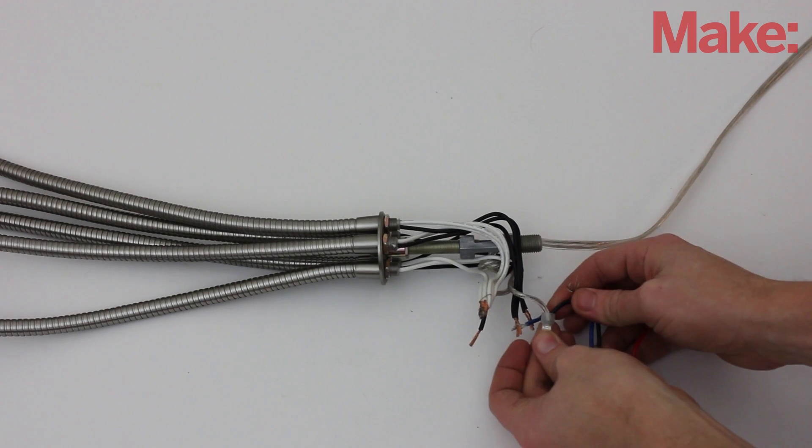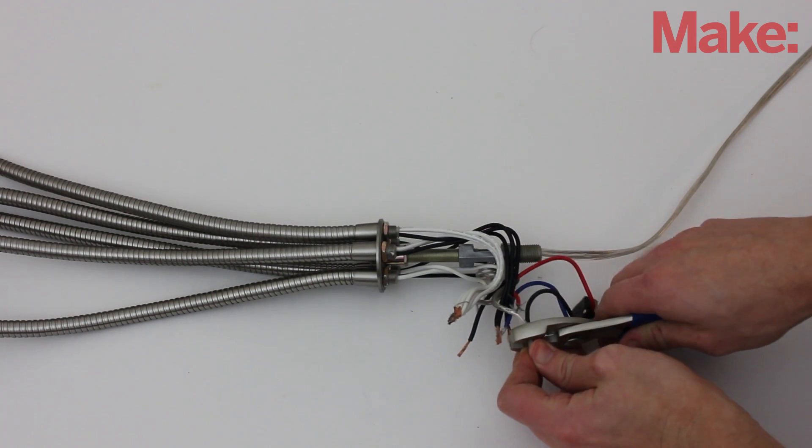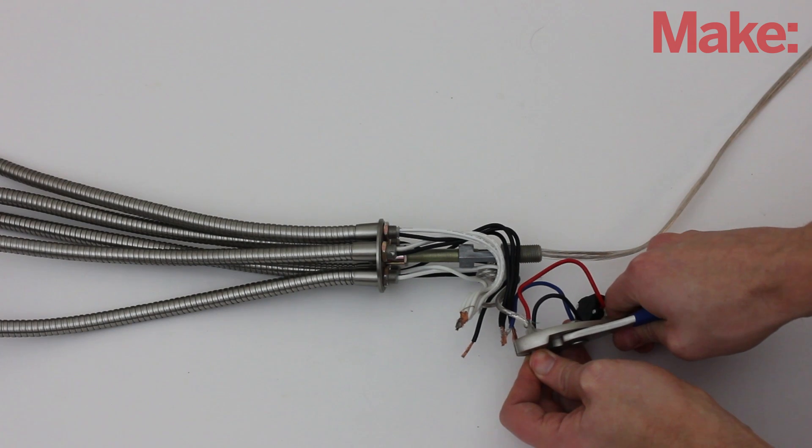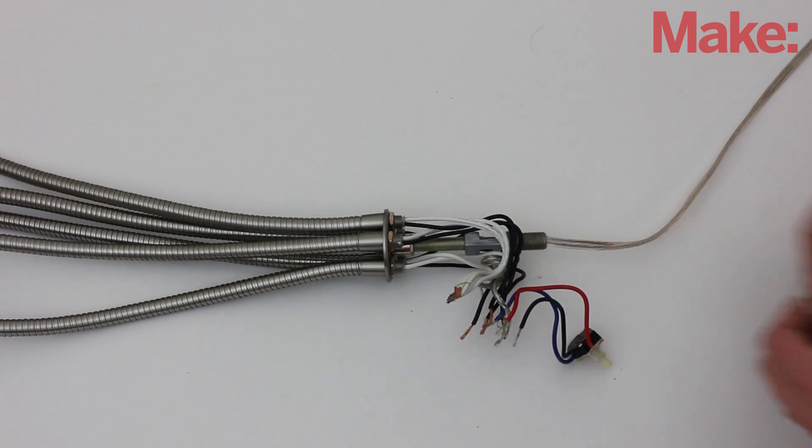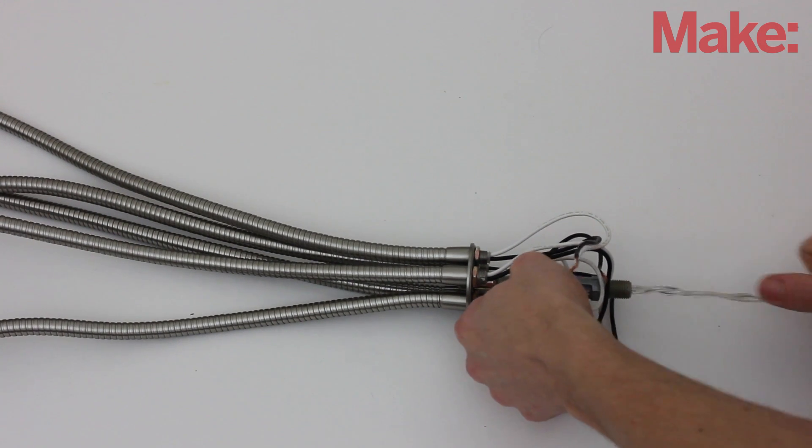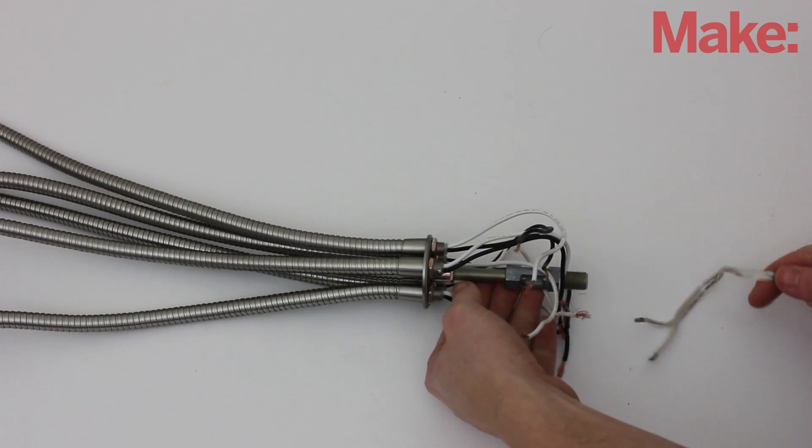The individual wires were connected with crimp-on connector caps, so I used a pair of pliers to squeeze the cap in the opposite direction as the crimp. This loosened them enough to remove them. Separate all the wires and pull the main power cord out through the base of the stand.